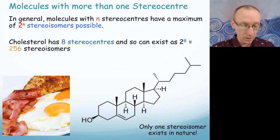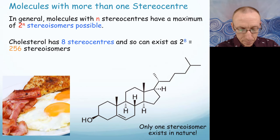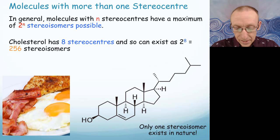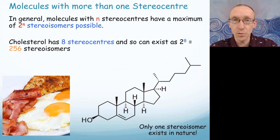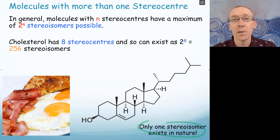Back to stereogenic centers: every time we have a stereogenic center there are two possibilities — R or S configuration. So for a molecule with more than one stereogenic center, we multiply the possibilities together. For example, cholesterol has eight stereogenic or chiral centers, so theoretically there could be 2^8, or 256 stereoisomers of cholesterol. This is a theoretical maximum of 256 different stereoisomers, and yet nature only makes one stereoisomer of cholesterol.